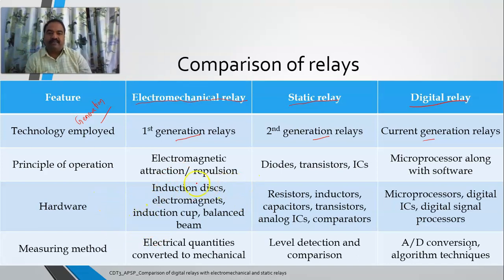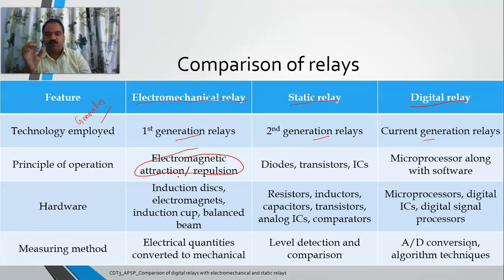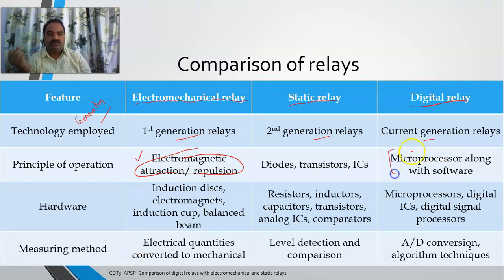Coming to the principle of operation: electromechanical relays use electromagnetic attraction and repulsion. You may have seen many types — balanced beam, attracted armature, induction disc, induction cup relays. The common element is an armature and a magnet, with attraction or repulsion between them. Based on the actuating quantity, movement occurs which gives a signal to the circuit breaker. Static relays use diodes, transistors, and advanced ICs. Digital relays use a microprocessor along with software, employing coding techniques and algorithms — the relay operates based upon the program written.